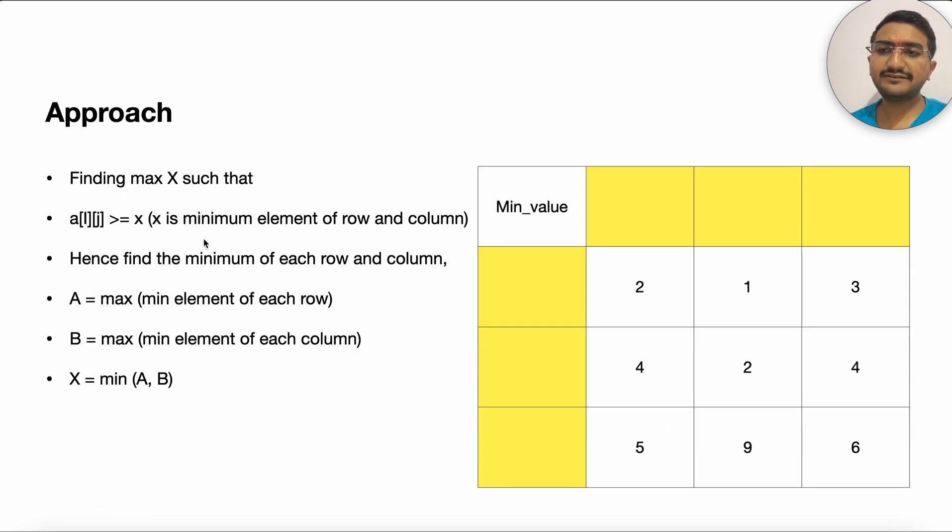The approach that I followed was pretty simple. The question is just to find the maximum value of x such that all a[i][j] is greater than or equal to x, which just means that x is the minimum element of that particular row and particular column. So what I did is broken down the problem into two smaller issues.